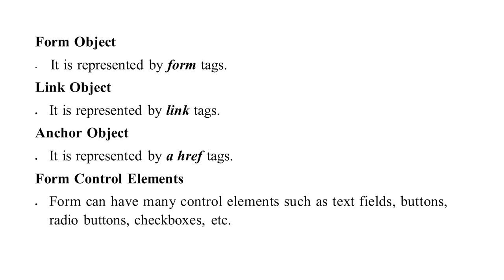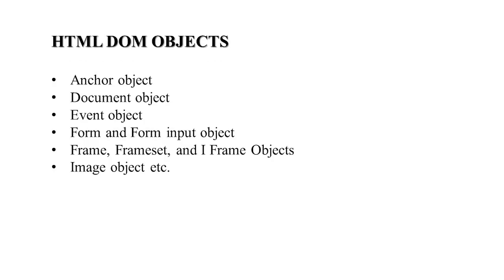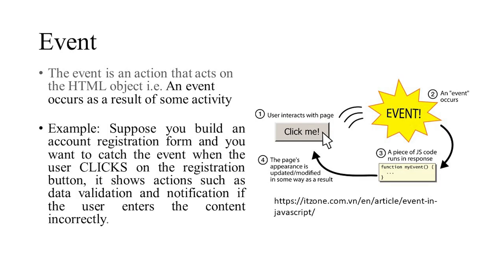Other DOM objects include: form objects representing form elements, link objects representing hyperlinks, anchor objects representing href elements, and form control objects like text fields, buttons, radio buttons, and checkboxes. HTML DOM objects also include anchor objects, document objects, event objects, form input objects, frame and frameset and iframe objects, and image objects.